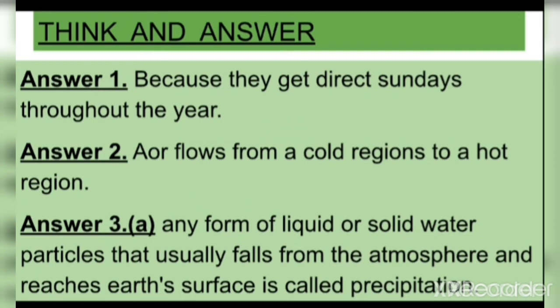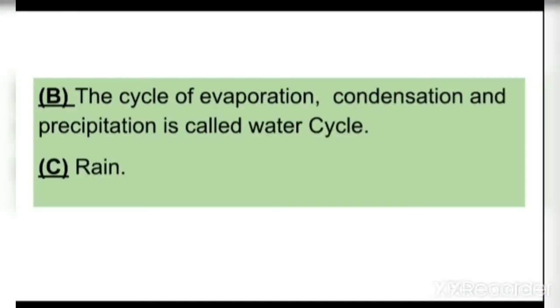Answer 3B: The cycle of evaporation, condensation, and precipitation is called the water cycle. Answer 3C: Rain.